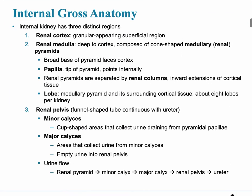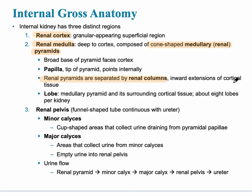The internal gross anatomy of the kidney includes the renal cortex, which is the outer granular-appearing superficial region. Deep inside the kidney is the renal medulla, which contains cone-shaped medullary pyramids — they're kind of shaped like triangles. Between the renal pyramids are renal columns, which are inward extensions of cortical tissue.